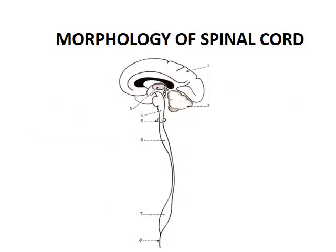Let us begin these lectures by the study of the anatomy of the spinal cord. The spinal cord is the lower part of the central nervous system that lies within the vertebral canal of the vertebral column, and it is continuous above with the brain stem at the level of the foramen magnum.